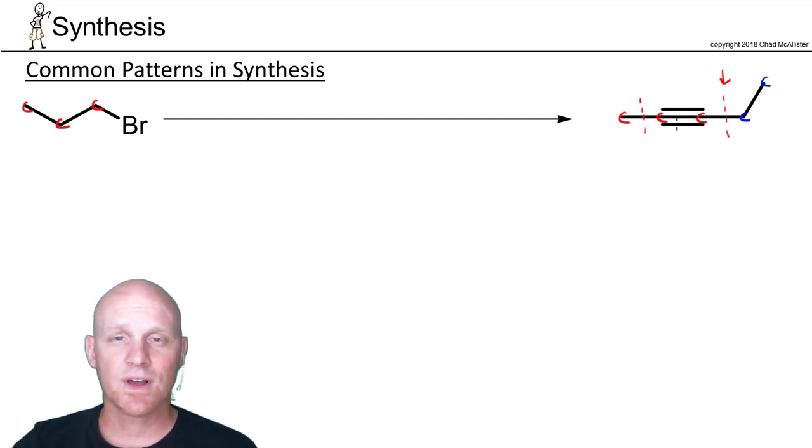So in this case, first thing we should realize is that we have a longer carbon chain in the product, and we're probably going to be using an acetylide somewhere along the way. That's your big way of getting the carbon chain longer.